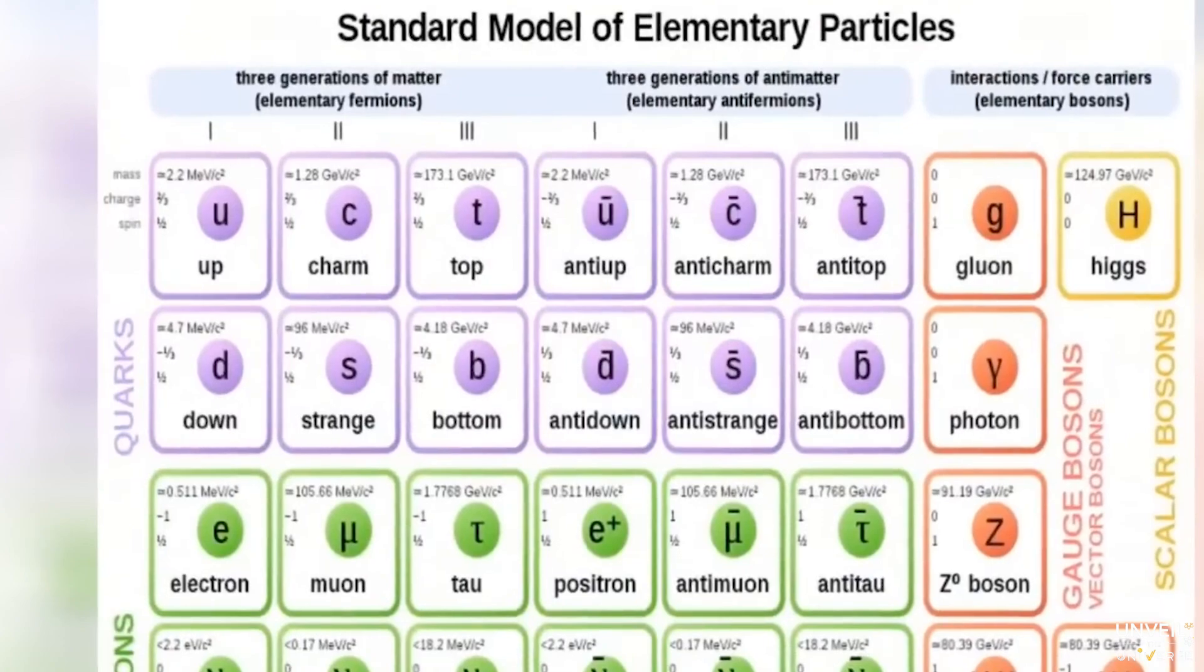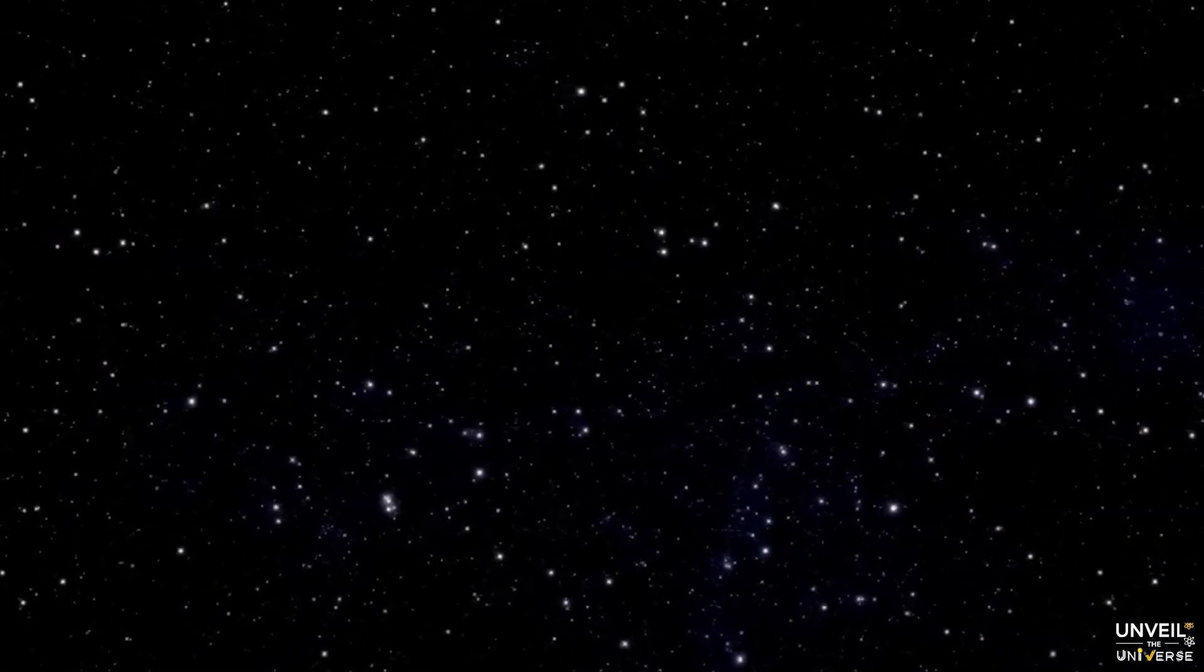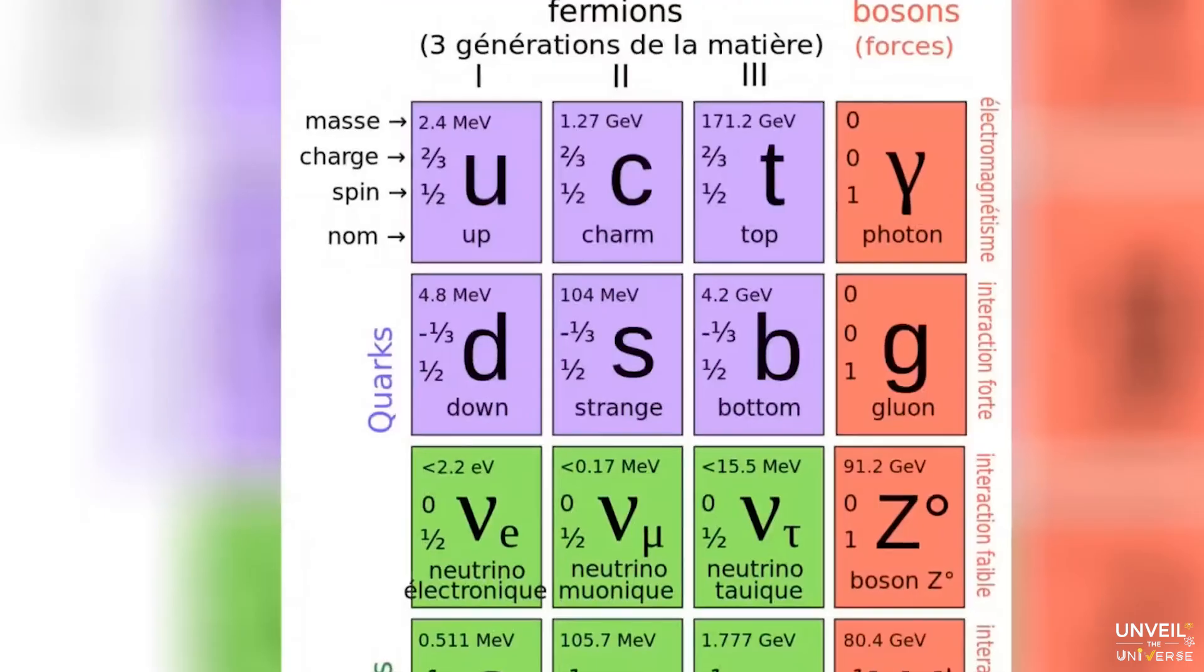The standard model is divided into two main sections: particles that make up matter, and particles that carry the fundamental forces of nature. Since elementary particles are the basic building blocks of matter, let's start with the fermions, which are categorized into two groups.